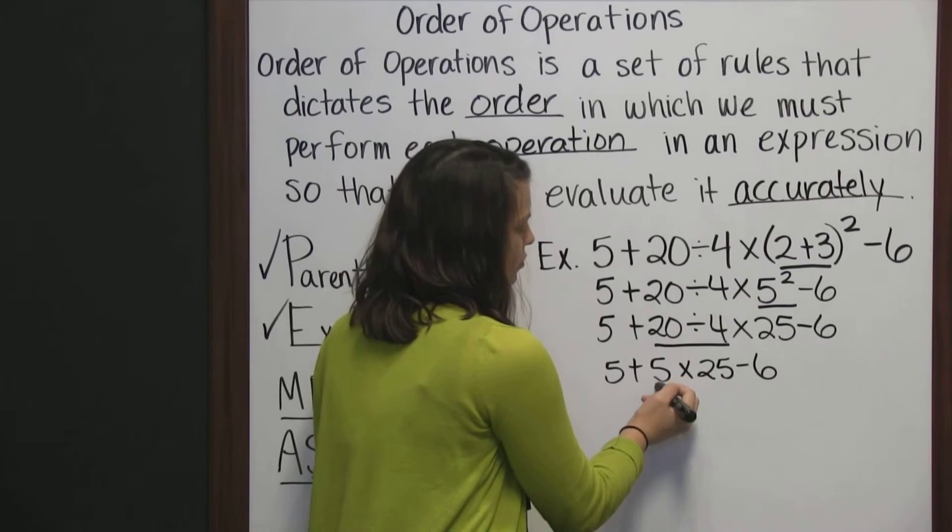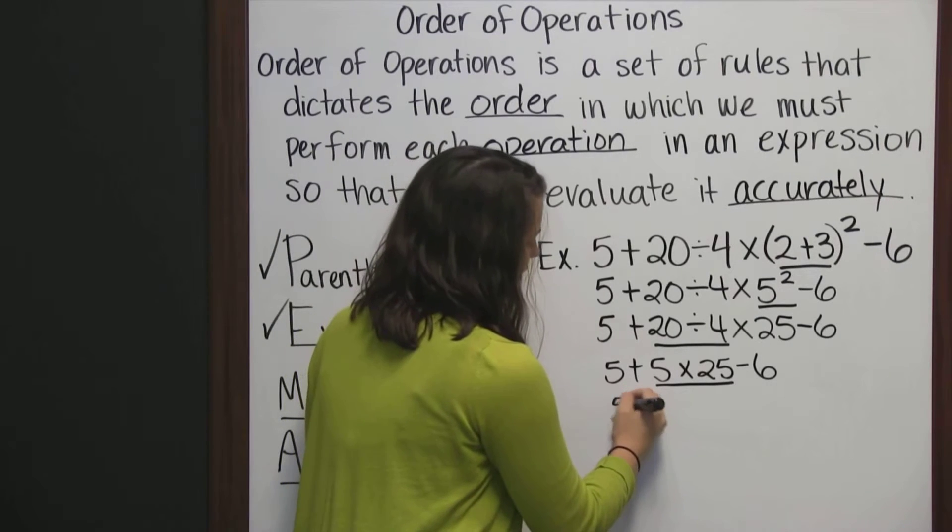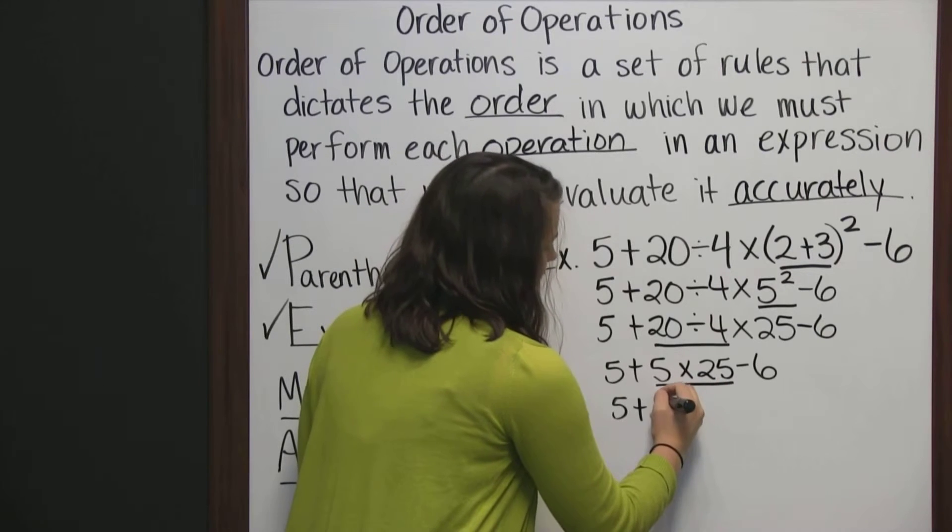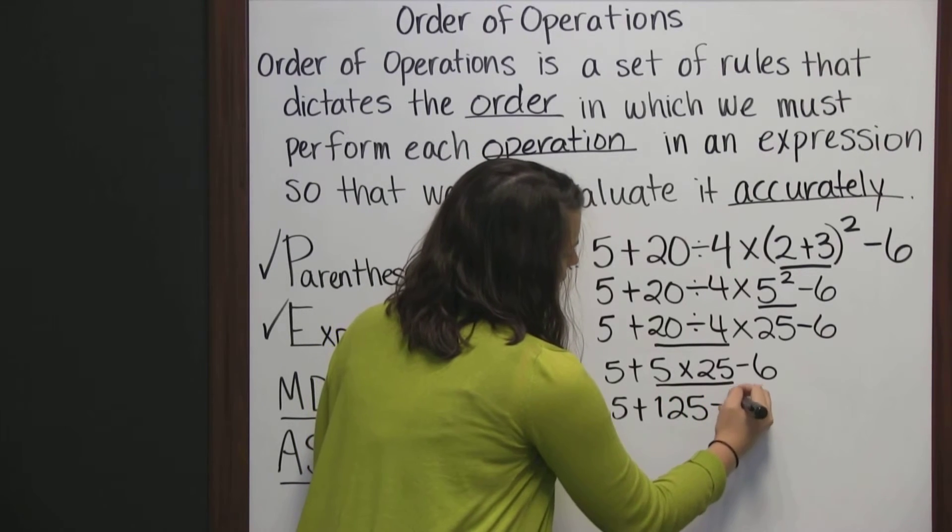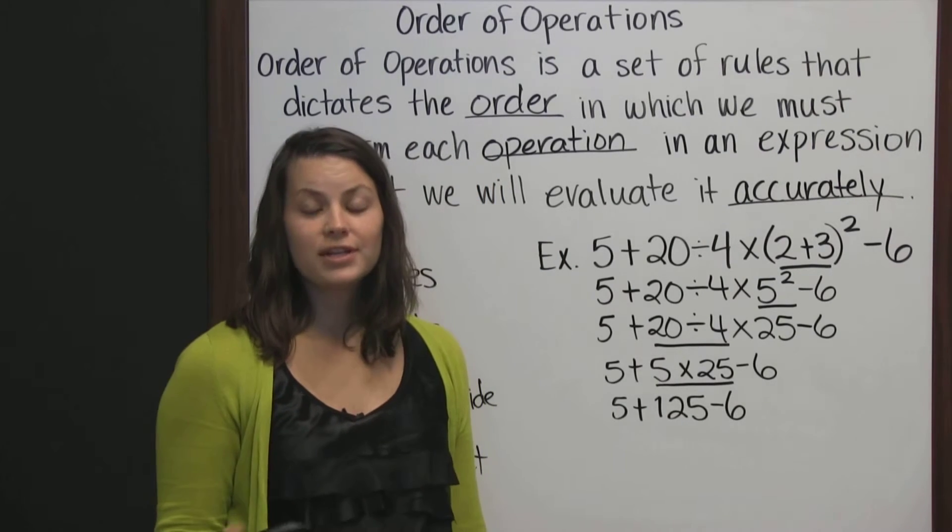Now we're going to look for more division and multiplication from left to right. And we see that we have multiplication. So that's the next thing we need to do. So we bring down our 5 plus 5 times 25 is 125 minus 6. We're done with all multiplication and division.